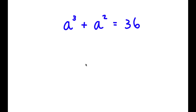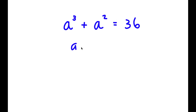In this problem, I have a to the power of 3 plus a squared equals 36. To find all solutions, I need to first find one solution by plugging in numbers. Plugging in 1 gives 2, which is wrong. Plugging in 2 gives 8 plus 4, which is 12, also wrong. Plugging in 3 gives 27 plus 9, which equals 36. So a equals 3 is one solution.